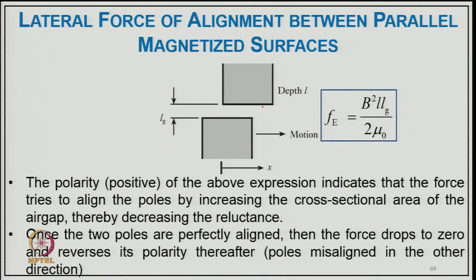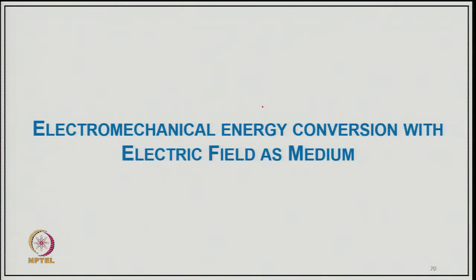The depth is l of the surface, l_g is the air gap, and the lateral direction of motion is x. The lateral force developed is B²·l·l_g/(2μ₀). The positive expression indicates the force tries to align the poles by increasing the cross-sectional area of the air gap, thereby decreasing the reluctance. Once the two poles are perfectly aligned, the force drops to zero and reverses polarity thereafter, causing alignment force in the other direction — this is the principle of some electrical machines.